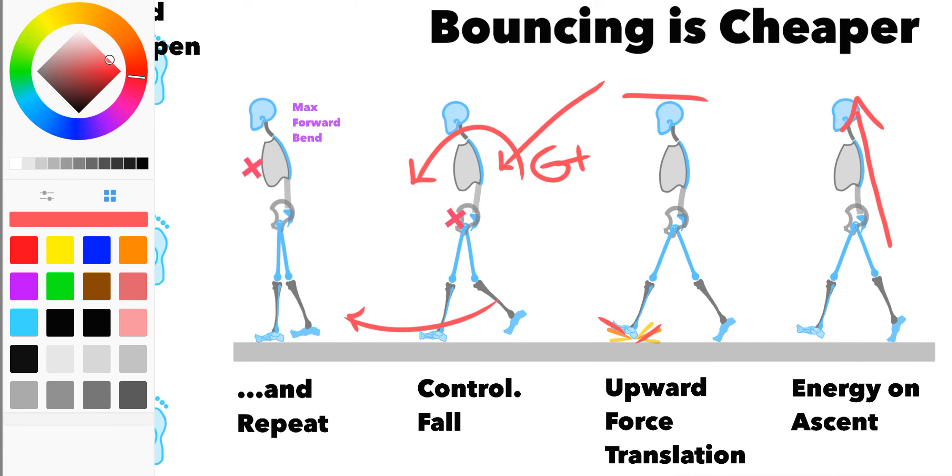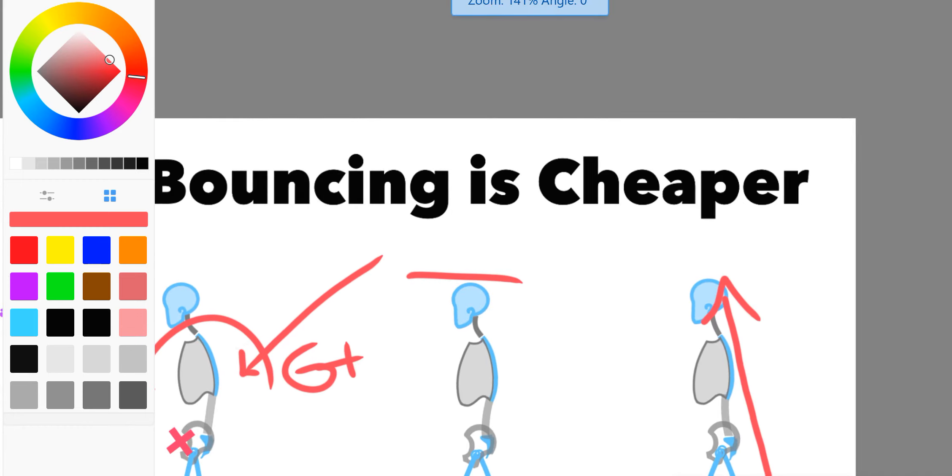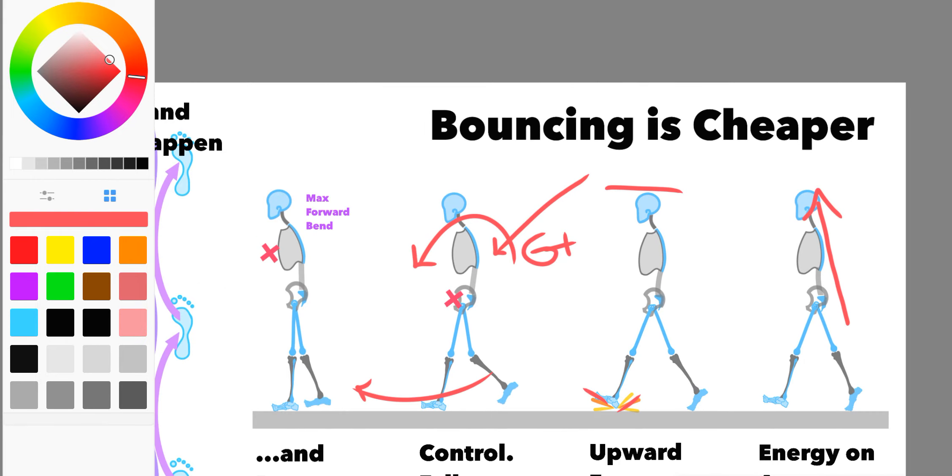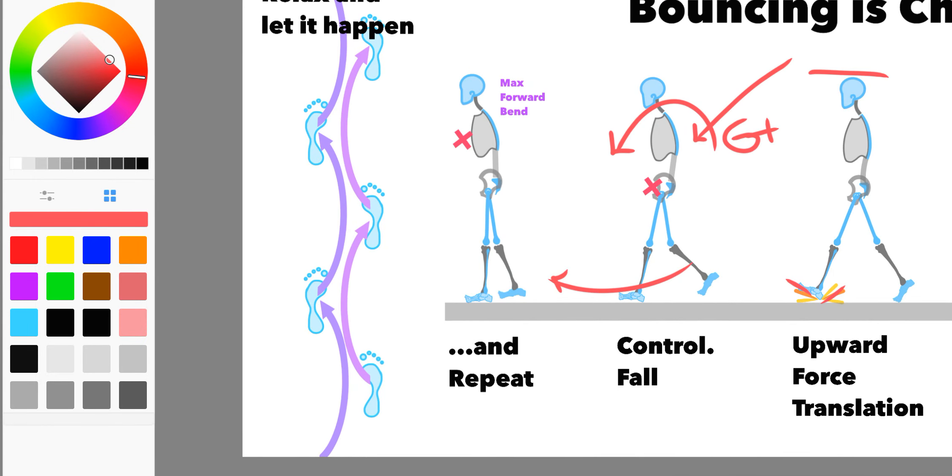And there's some great articles you can read on this. They're readily available explaining all this in far better detail than I can. But in any case, this is really cool because bouncing, it turns out, is way cheaper in the long run. It's not a bad thing, you should totally go for. Believe it or not, this is one of many kind of semi-circular ways the body moves in gait, or just in general.